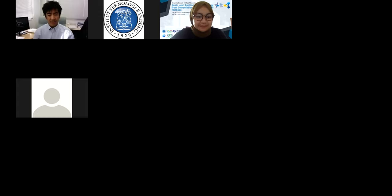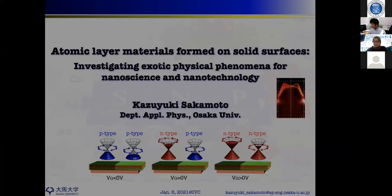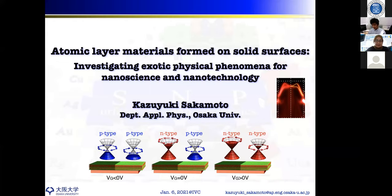Good morning, I'm Kazuyuki Sakamoto from the Department of Applied Physics at Osaka University. Thank you for the kind introduction. I'd like to give a lecture about atomic layer materials formed on solid surfaces, which are known to show exotic physical phenomena that can be used for nanoscience and nanotechnology. Here is the outline of my talk.